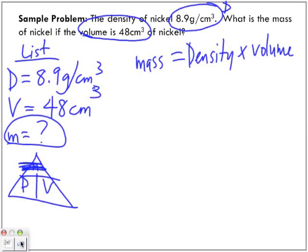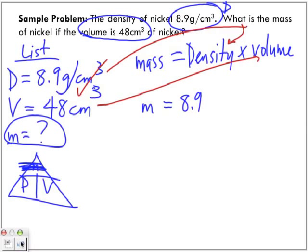So we've already gotten our one mark here. Our next mark is going to be when I substitute these into my equation. So mass is equal to density, which is 8.9 grams per centimeters cubed, don't forget the units, times the volume, which is 48 centimeters cubed. Now, because this is per centimeters cubed, centimeters cubed crosses out. Look at my units for mass.